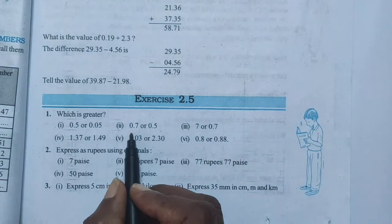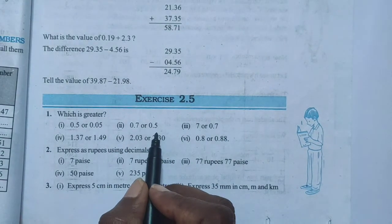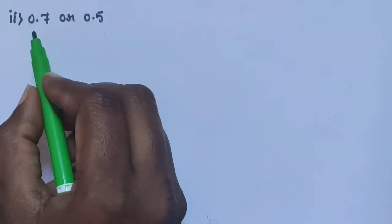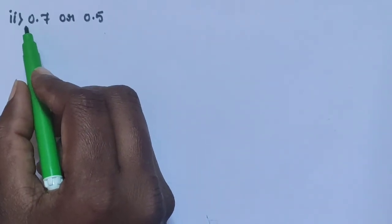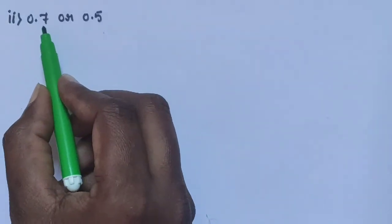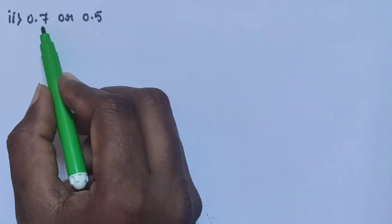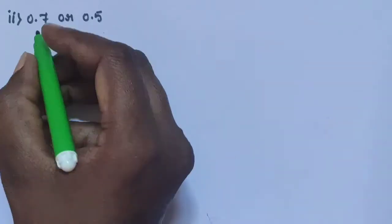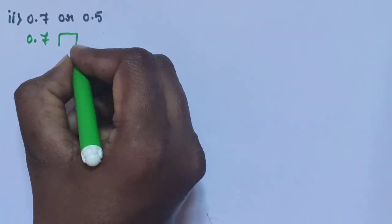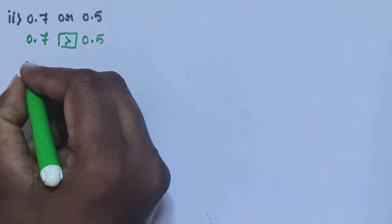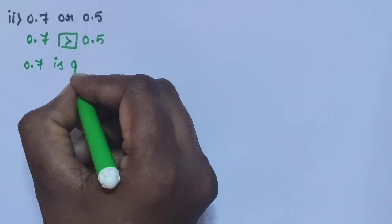Sub-question 2: 0.7 or 0.5. First compare the whole number part — units place is 0 and 0, same. Next compare the decimal part: tenths place is 7 and 5. Compare 7 and 5 — 7 is the greatest. Therefore, 0.7 is greater.